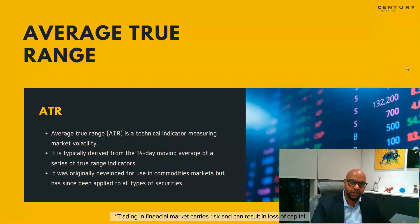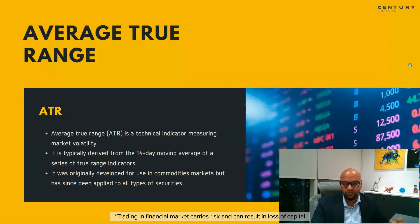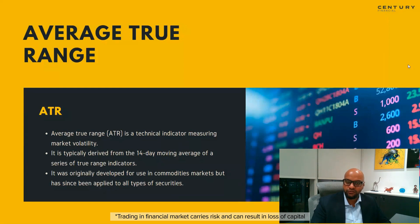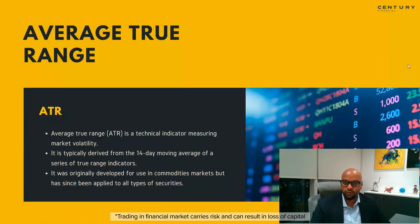Moving forward, before getting into Fibonacci, there is Average True Range (ATR) — one of the technical tools that helps a lot when deciding how much profit or loss one should take on an investment or trading decision. ATR is very simple to understand. Basically, if you're looking at a particular stock on a daily time frame, you want to know on average how much that stock moves every day. For example, how many dollars can gold move every day?